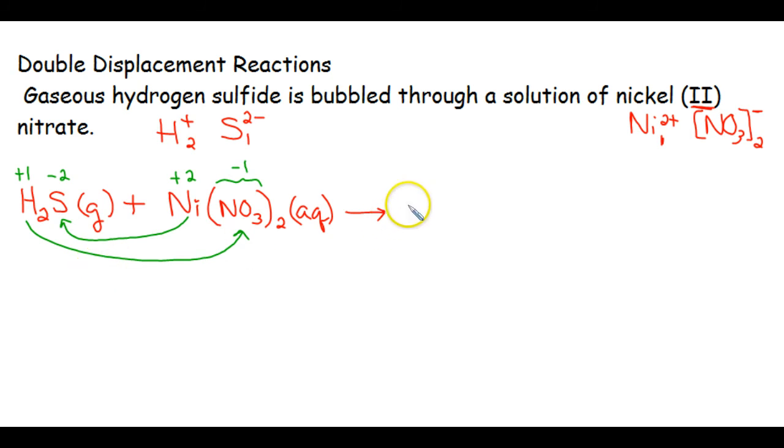Now you still have to write correct formulas. So if hydrogen is plus 1 and nitrate is a minus 1, 1 of each will balance them out. So HNO3 will be the formula for your first product. Your second product is nickel plus sulfur. We put the nickel first because it's positive. You have a plus 2 and a minus 2, which means they balance each other. So your formula is NiS.